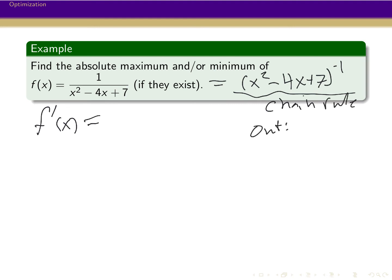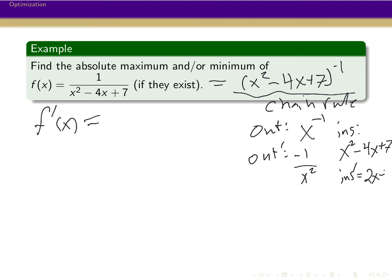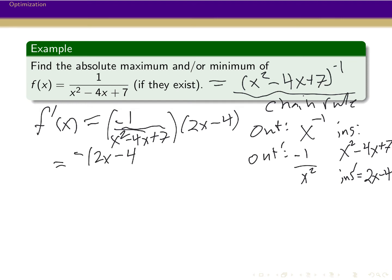Our outside function is x to the minus 1, and our inside function is the quadratic. The derivative of the outside is minus 1 over x squared. The derivative of the inside is going to be 2x minus 4. So putting this together, we have the derivative of the outside with the inside plugged in, multiplied by 2x minus 4.